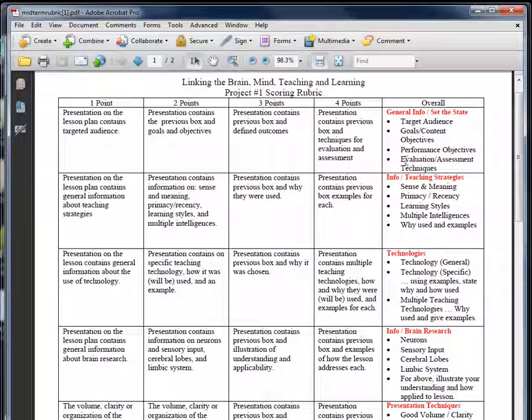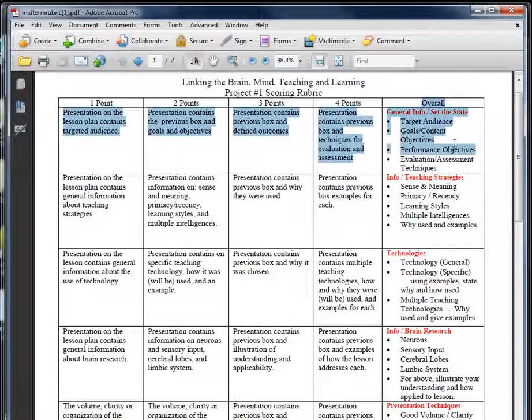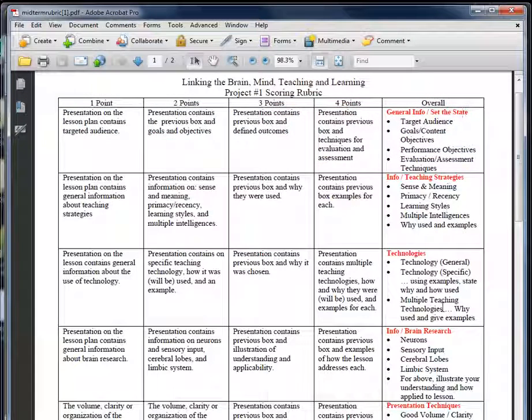In a rubric, this first horizontal line is a strand and it stops at four points. This far right column is a general synopsis of what the strand is all about. However, where you want to look for the details of the strand is right here in this area.